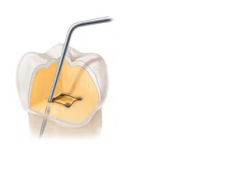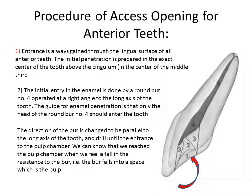For the access opening procedure in anterior teeth, we start palatally or lingually. Access is always gained through the lingual surface of all anterior teeth for aesthetic reasons. The initial penetration is prepared at the exact center of the tooth above the cingulum, with the bur position perpendicular to the tooth surface. Entry through enamel is done with round bur number 4, then you reach dentine and remove dentinal tissue until you feel the bur drop — indicating you are in the pulp.